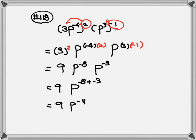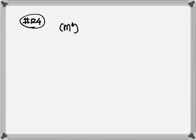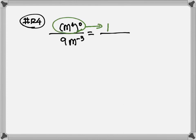Again, we don't want negative exponents. The negative 11 belongs to the p — it does not belong to the 9. So 9 stays on top; we only move p to the bottom. Once you move it to the bottom, it becomes a positive exponent. Now let's look at number 124. We have n to the fourth power, everything to the 0 power, then 9 and negative 3. Everything to the 0 power equals 1, so the whole numerator is equal to 1. At the denominator we have n to the negative 3 — we don't want the negative exponent, so we move it up: it becomes n to the positive 3. We keep the 9 at the denominator. So the answer will be n to the third power over 9.